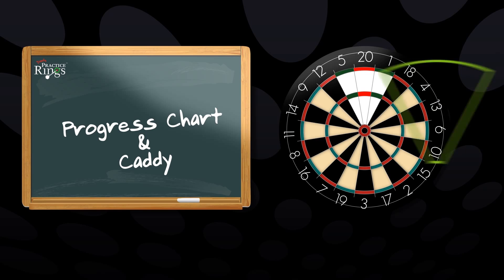The progress chart is held in place by the progress chart caddy. A player will choose an area of the dartboard where they feel they require the most improvement. 21 darts are then thrown at the progress chart.